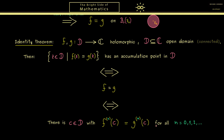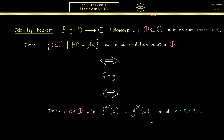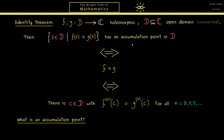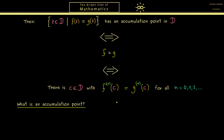And now this whole thing here is what we call the identity theorem of complex analysis. Now before we prove this fact, let's first talk about the important concept in this theorem — the concept of an accumulation point. So in order to apply this theorem, you actually have to know what an accumulation point in d is. Therefore let's write down the definition here.